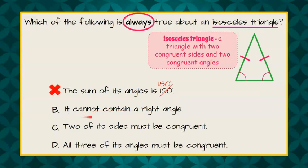Choice B. It cannot contain a right angle. Well, we have a special kind of right isosceles triangle where these two are congruent angles and these are two congruent sides and it has one 90 degree angle making it a right isosceles.